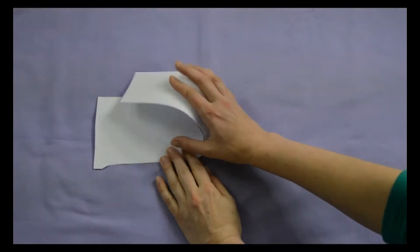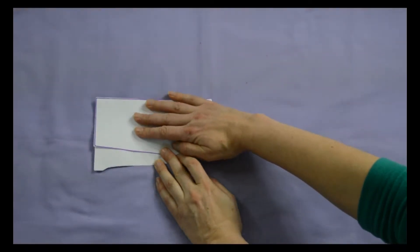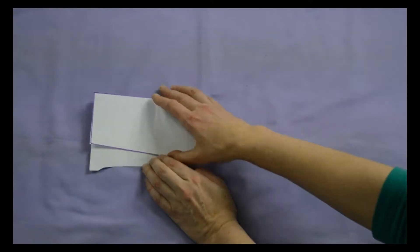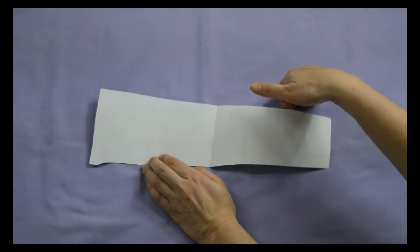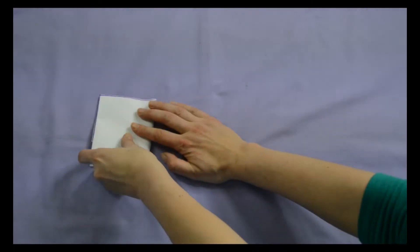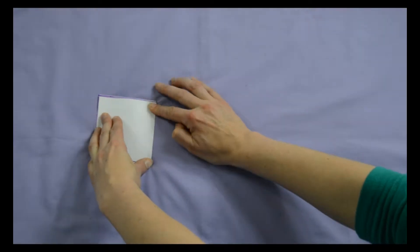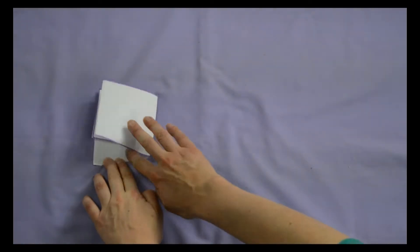Fold the remaining pattern in half. This center fold is approximately where the elbow will be in your garment. Fold the sleeve in half again. When you open it out, you will have three folds in your paper pattern.